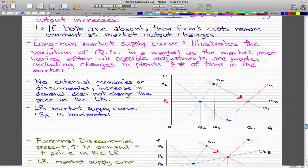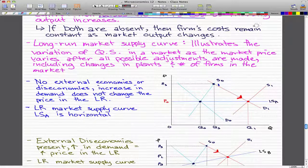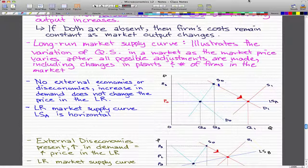Due to the fact that there's no external economies or diseconomies, the price actually did not change. So, the price will fall back downwards to P0.